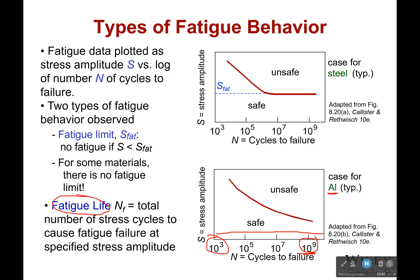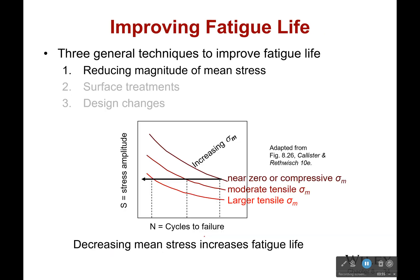The fatigue life is the total number of stress cycles until it finally causes fatigue failure at a particular stress amplitude — that particular change, up and down, up and down — a certain number of stress cycles will lead to failure. So how can we improve fatigue life?